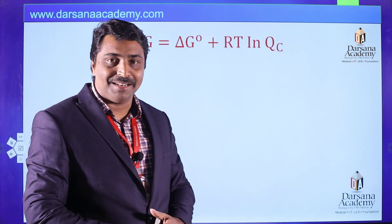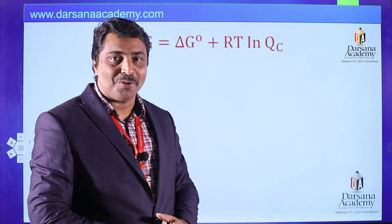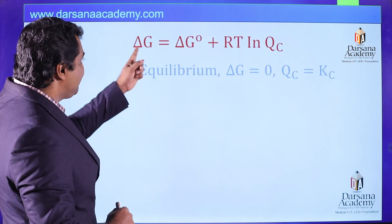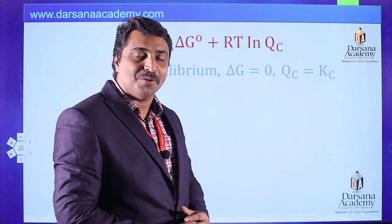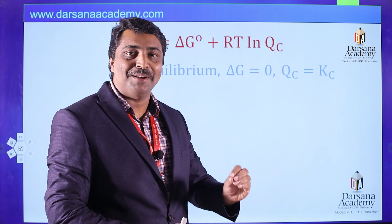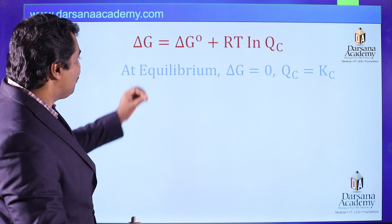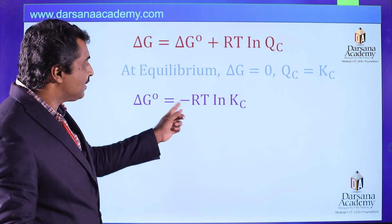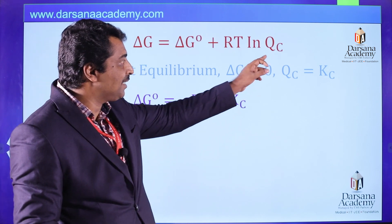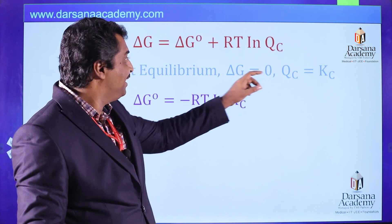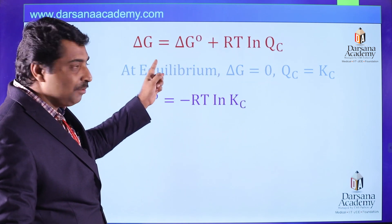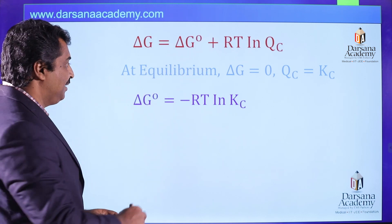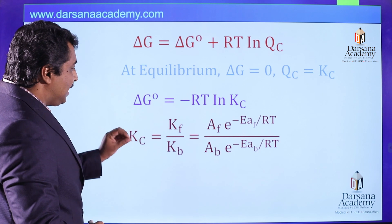From thermodynamics: delta G is the free energy change, delta G zero is the standard free energy change, and QC is the reaction concentration quotient. At equilibrium, delta G equals zero and QC becomes KC, so the equation rewrites as delta G zero equals minus RT times ln(KC).